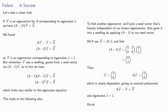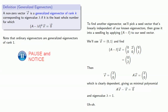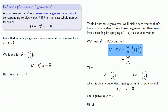This leads to the following idea. A nonzero vector v is a generalized eigenvector of rank k corresponding to eigenvalue lambda if k is the least whole number for which (A minus λI)^k applied to v gives us the zero vector. Note that ordinary eigenvectors are generalized eigenvectors of rank 1. For our vector u = (0, 1), (A minus I)² applied to u gave us the zero vector, but (A minus I) applied to u was not the zero vector, so u is a generalized eigenvector of rank 2 for lambda equals 1.